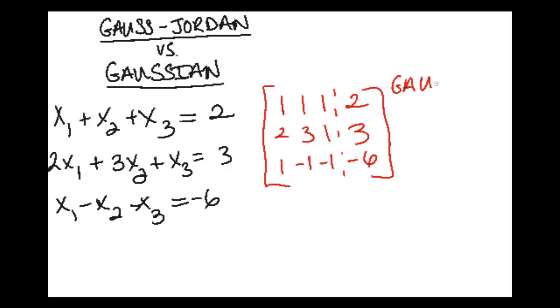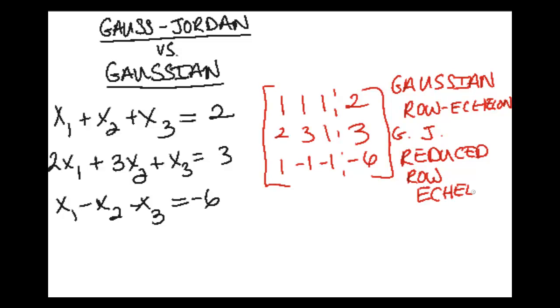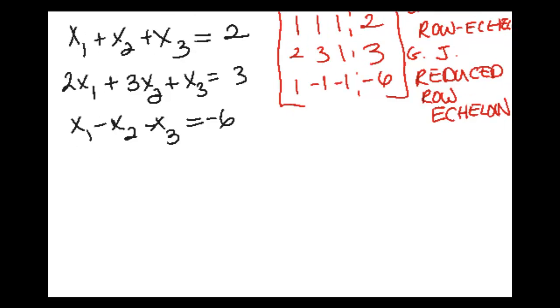With Gaussian elimination, you go to row echelon and you back substitute. And with Gauss-Jordan, you go to reduced row echelon. And once you're in reduced row echelon, you have your solutions. There's no more work.